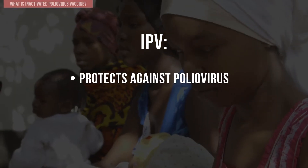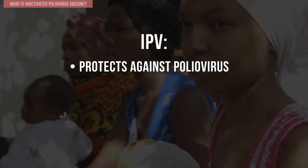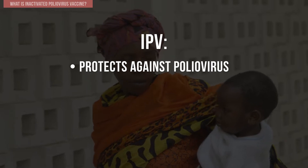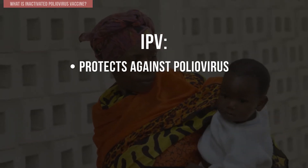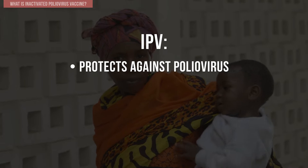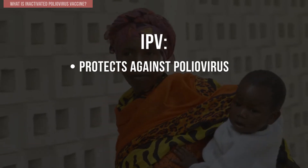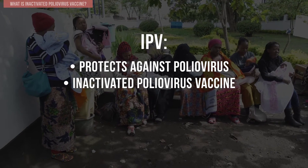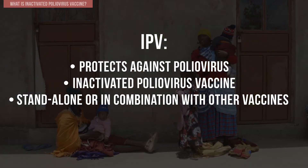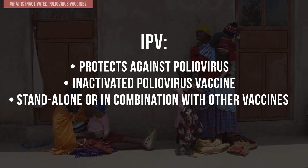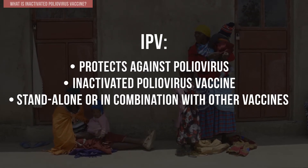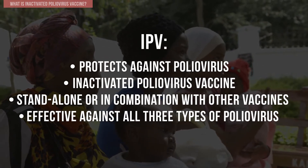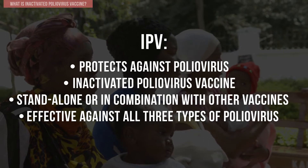IPV protects against poliovirus. Poliomyelitis, or polio, is a highly infectious viral disease caused by poliovirus types 1, 2, or 3 and can lead to paralysis. IPV is available as a standalone product or in combination with diphtheria, tetanus, pertussis, hepatitis B, and/or Hib. IPV is highly effective against all three types of poliovirus.